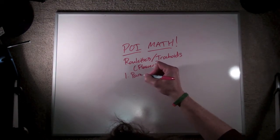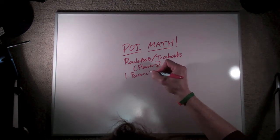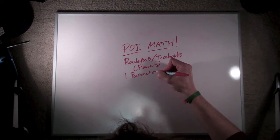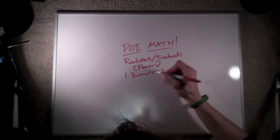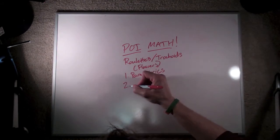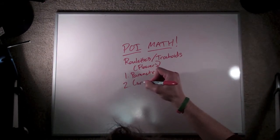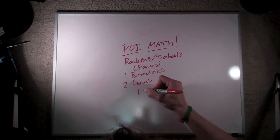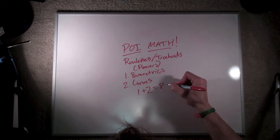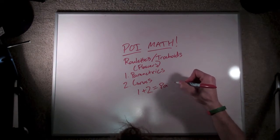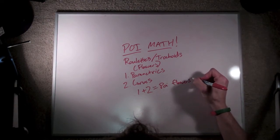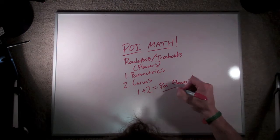We're going to go through two components in order to get there. The first is we're going to learn how to write parametric equations. Number two is we're going to play around a little bit with curves. And it turns out that when you put these two components together, it equals Poi flowers, or at least it shows you how to graph Poi flowers.